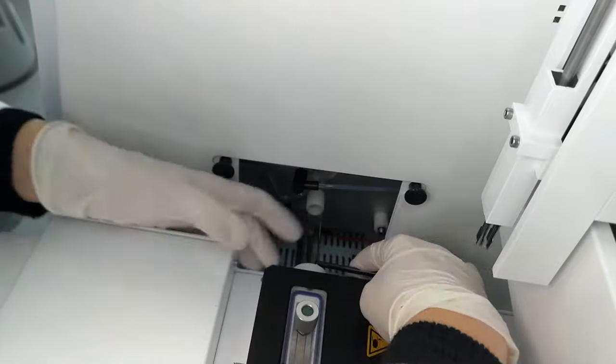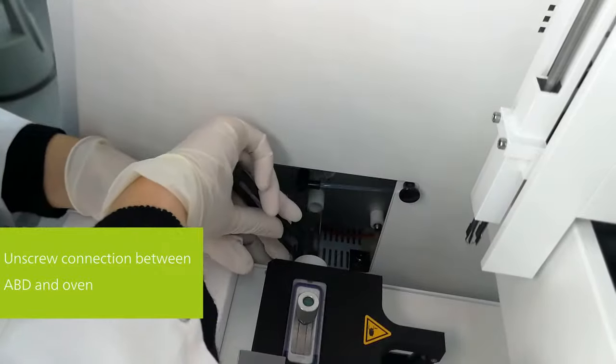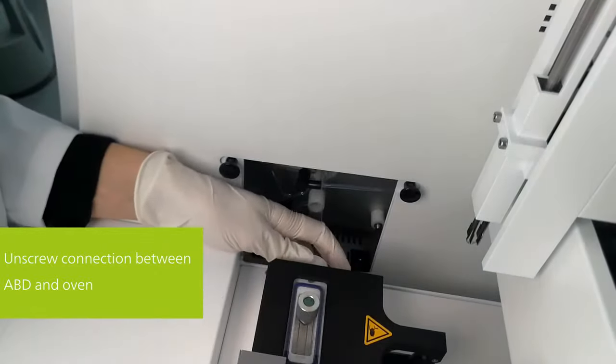Before you remove the combustion tube, make sure the oven has cooled down. In a first step, loosen the screw connection between the Autobot drive, ABD and the combustion tube using the adjustable pin wrench.